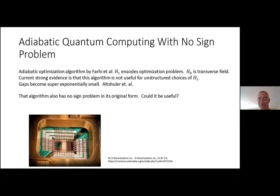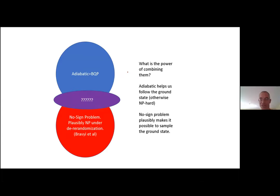Although there's strong evidence this algorithm isn't useful for unstructured H₁, it raises an intellectual question: once we impose the strong restriction that the Hamiltonian has no sign problem and we do adiabatic computation, could this actually be useful, or could all these devices just be simulated classically? I should remark that even adding a sign problem into the adiabatic algorithm in a naive unstructured way doesn't really help and may even hurt things.